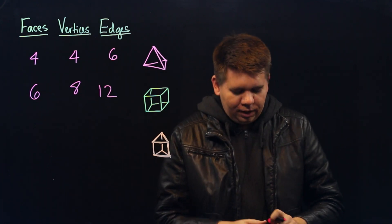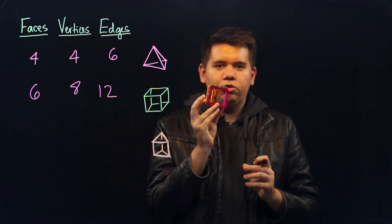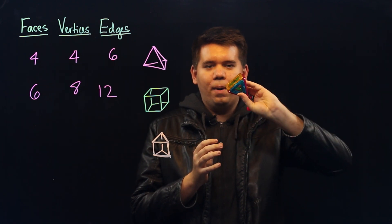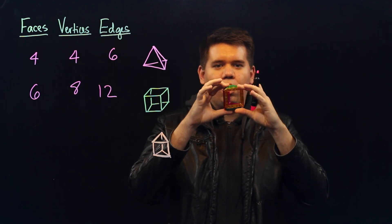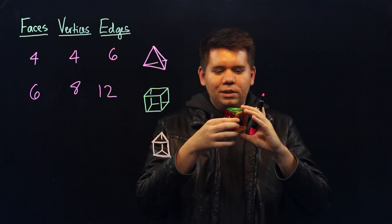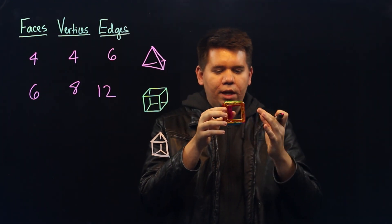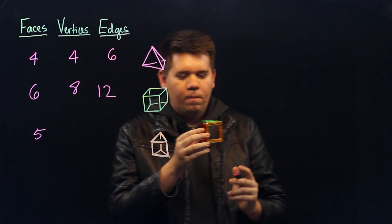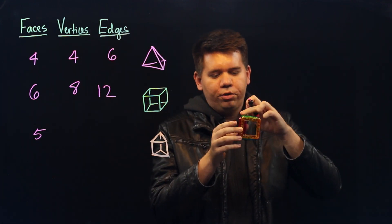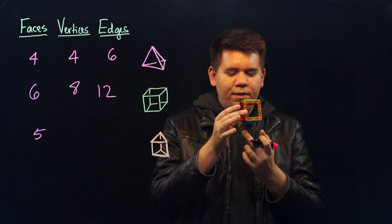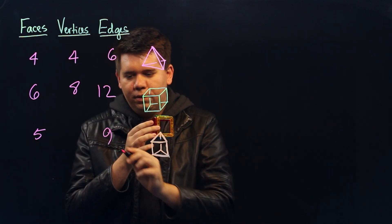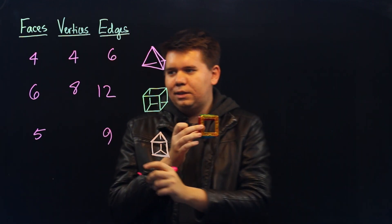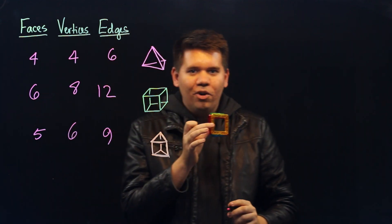How about this polyhedron, a triangular prism? Now we have triangles on the top and bottom, and squares on all of the sides. We notice there are 1, 2, and 3 for a total of 5 faces. There are 1, 2, 3, 4, 5, 6, 7, 8, 9 edges, and a total of 3 and 3 for 6 vertices or corners.